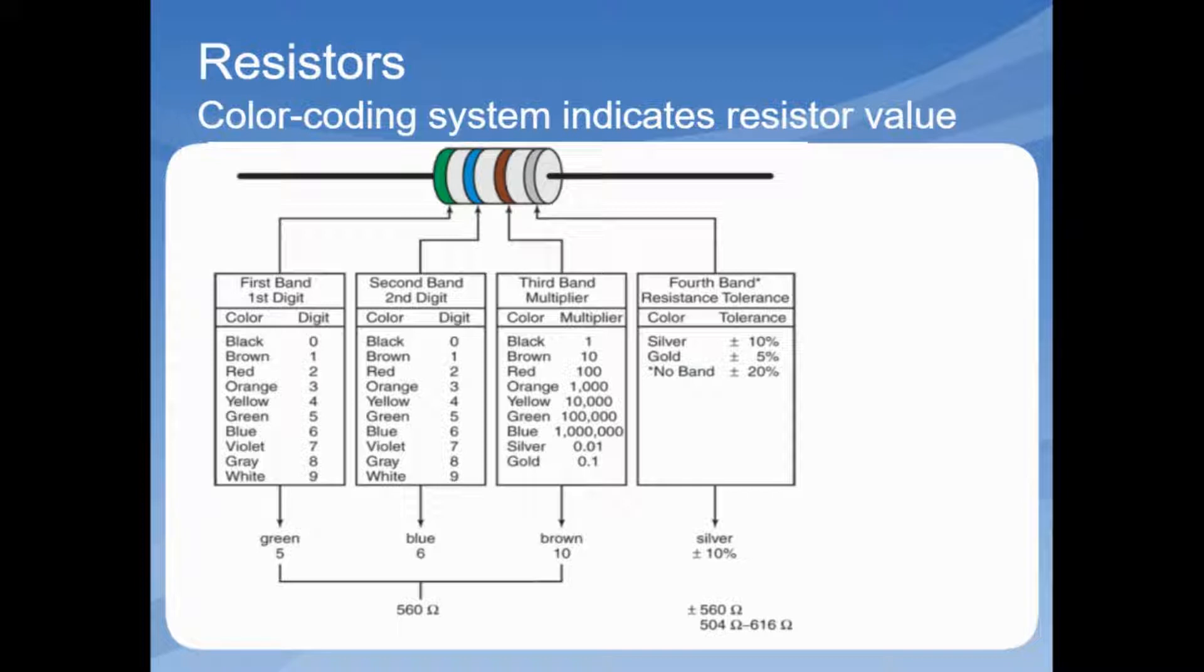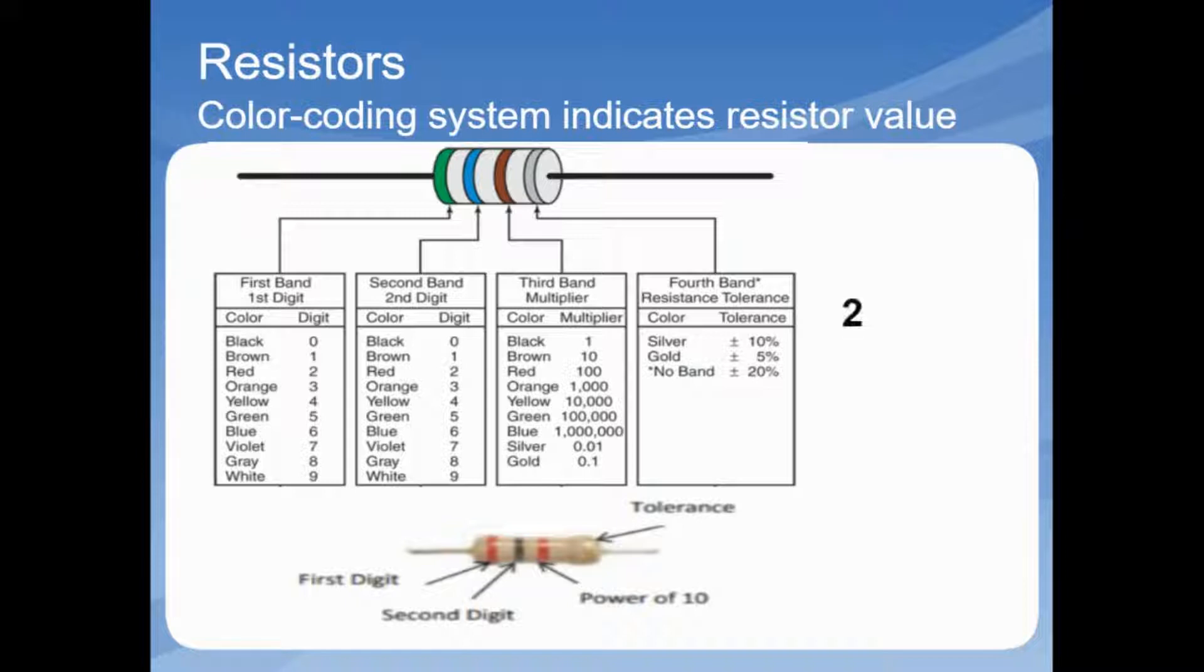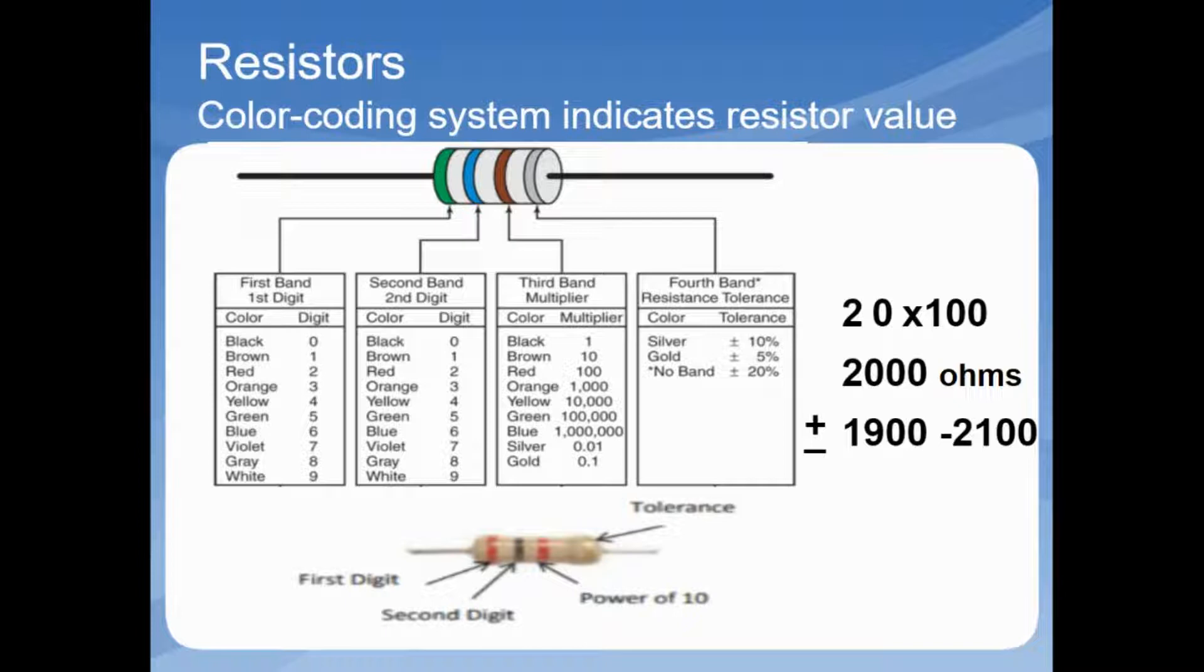Let's look at this example of a resistor. The first digit, if we see using this chart, is red, so our first digit is going to be a 2. Our second digit is black, and using the chart we can see that that is a 0. Our power, so our power in this example is going to be red, and that's going to be 100, so 20 times 100 equals 2,000 ohms. The fourth band is the resistance or tolerance. In this example it is gold, so it's going to be plus or minus 5 percent, and so that is going to be somewhere between 1,900 to 2,100 ohms for this example.